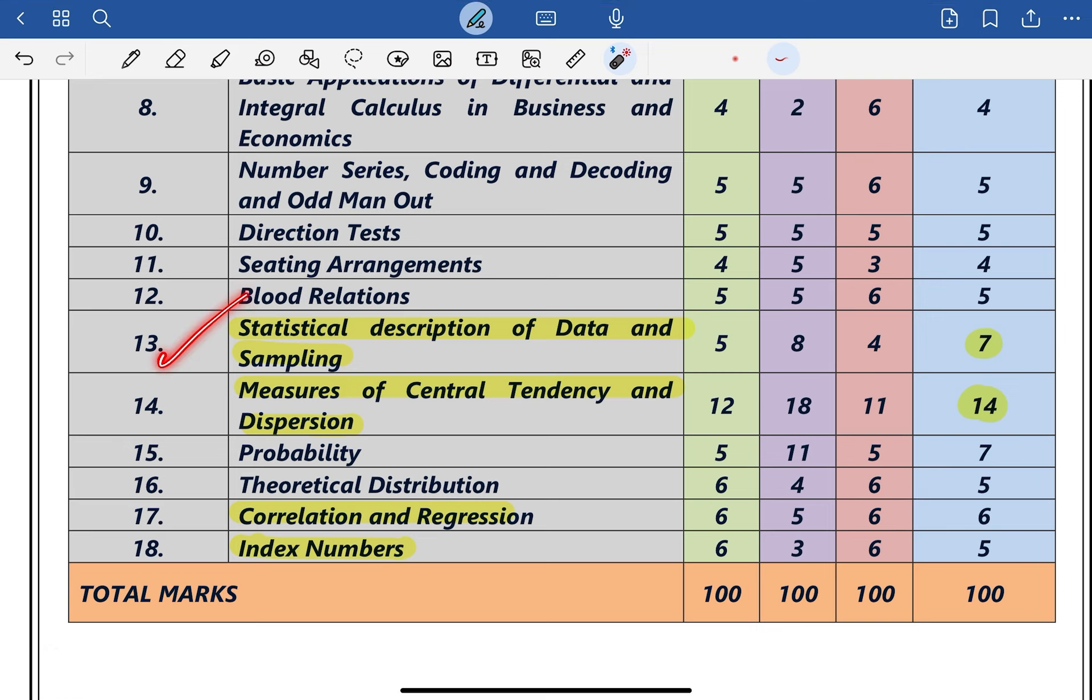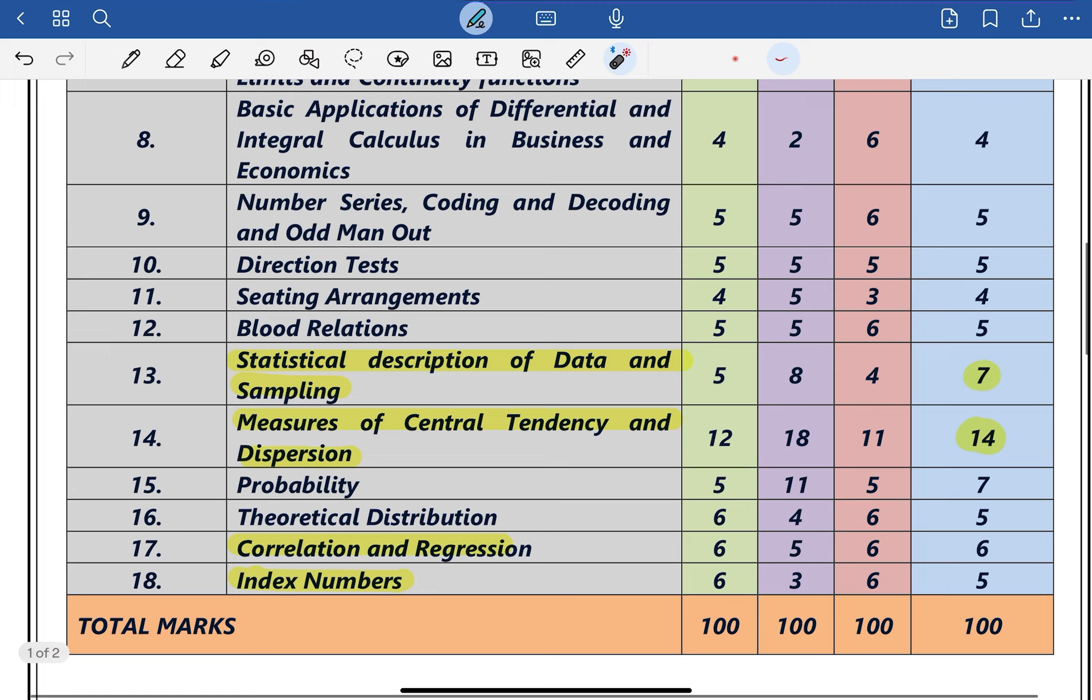Three MTPs they have released. If you see the chapters marked in yellow color which they have tested for more marks, the chapters like statistical description of data, measures of central tendency and dispersion in statistics, along with correlation and regression, and index number—these four chapters will cover somewhere around 30 marks in the statistics part.